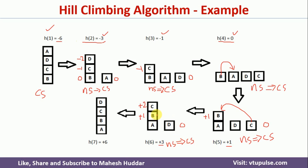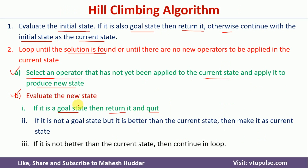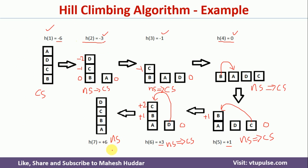From this current state, we apply one more operator: we move block D on top of block C. This produces a new state. When we evaluate it, this new state is actually the goal state. So we return this state and quit the algorithm.